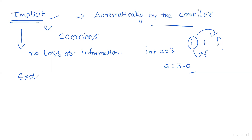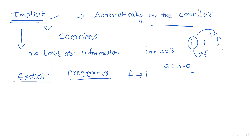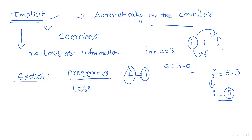The second type is explicit conversion. Here, not the compiler but the programmer specially writes to convert one data type into another — for example, float into integer. Float is a higher data type and integer is lower. If your float variable is 5.3 and you convert it to integer, the value becomes 5 — we lose information.